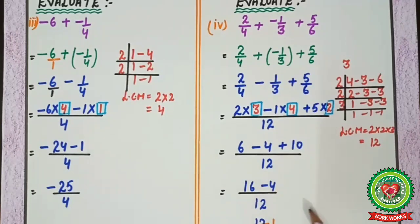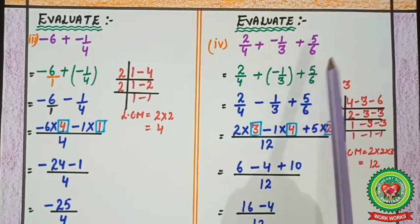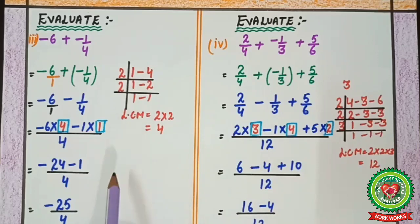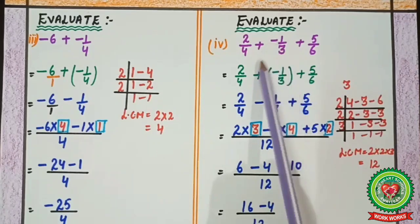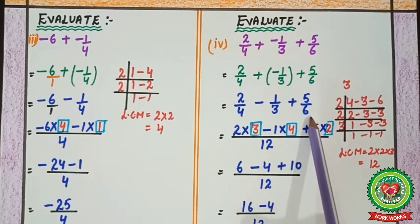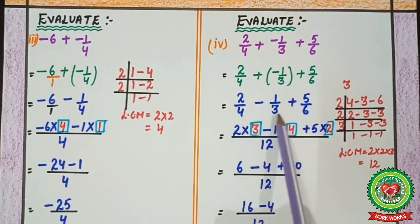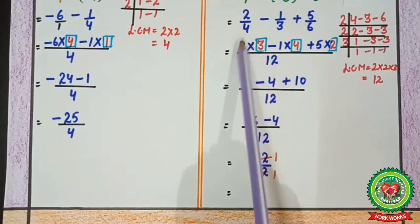Next example — evaluate: 2/4 + (−1/3) + 5/6. Here we have three rational numbers. Again plus and minus together is not allowed, so we put a bracket: 2/4 + (−1/3) + 5/6. Outer sign is plus, inner sign does not change, giving: 2/4 − 1/3 + 5/6. We take the LCM of 4, 3, and 6, which is 12.